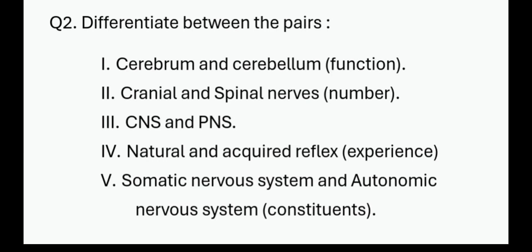Question number 2, you have to differentiate between the pairs. In case of differentiation, with the point mentioned in the bracket, you are supposed to make a table and in tabulated form write the differences in points exactly with respect to the point mentioned. For example, for cerebrum and cerebellum, you only have to differentiate based on function. There are 5 different points on which you have to do it.